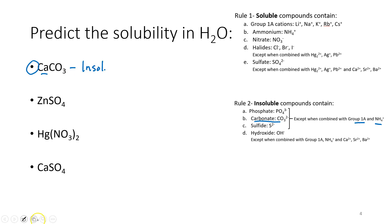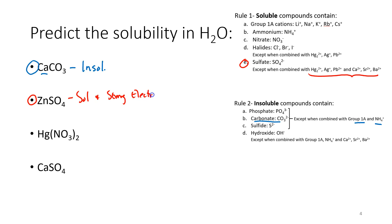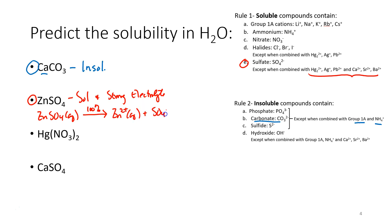How about the next one? Zinc sulfate. All sulfates are soluble except when combined with those specific cations, which we're not, so this would be soluble and therefore a strong electrolyte, meaning that in water, zinc sulfate dissociates 100% into zinc ions and sulfate anions.